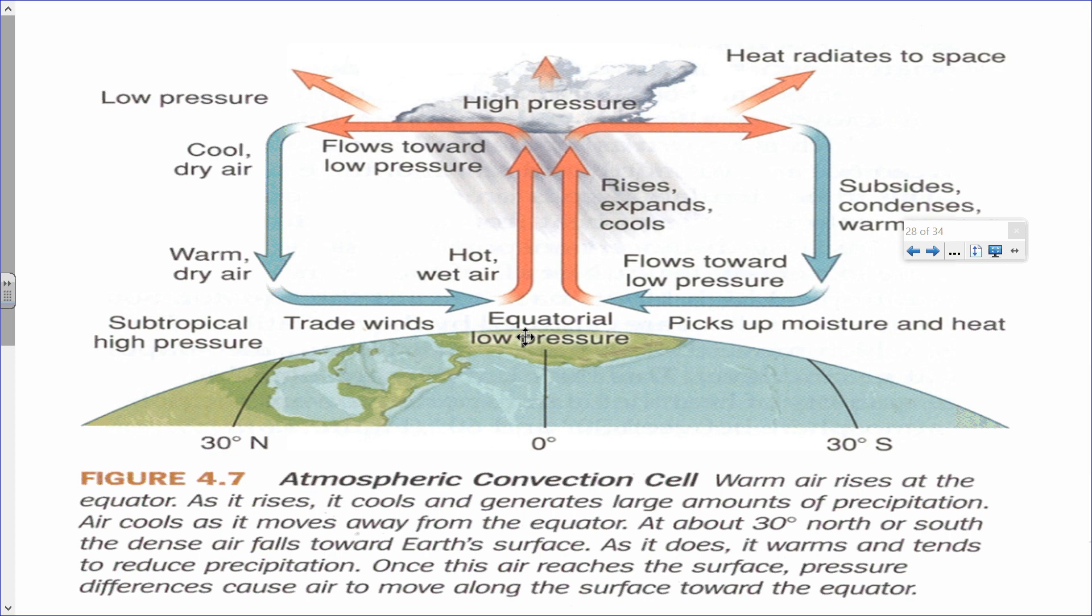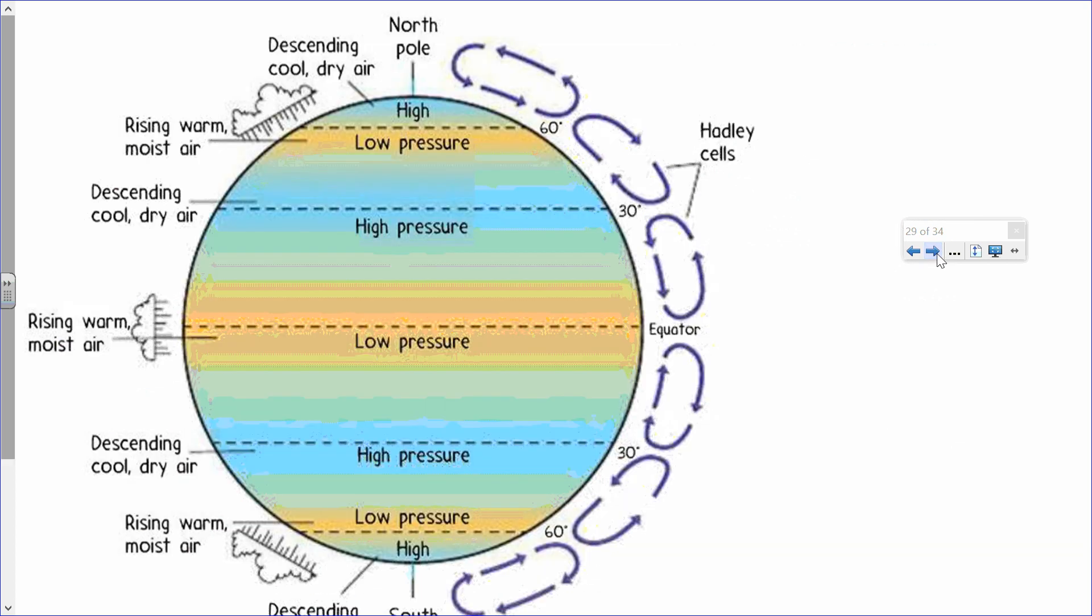At zero degrees latitude, obviously you're going to have your warm and wet regions. And we can see this from this diagram right here. Again, at the equator you're going to have low pressure because the air is rising. Then during the convective process you're going to have sinking air at 30 degrees latitude north and south.